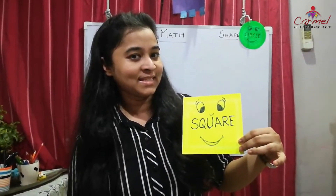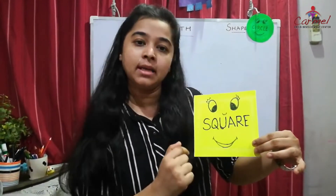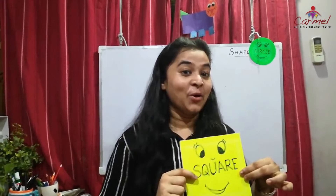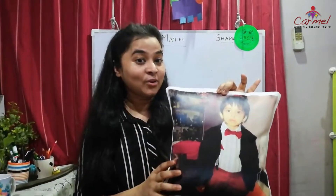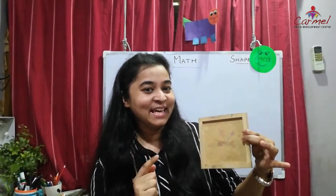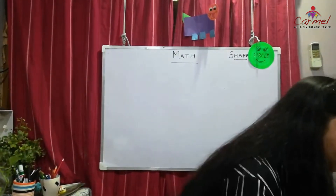Which shape is this? It's a square. The square has all four sides equal — right, left, up and down, all four sides are equal. Can you see any square objects around your house? Yes — the pillow you use when sleeping looks square in shape, and the wooden block also looks square in shape. Let's trace the square.